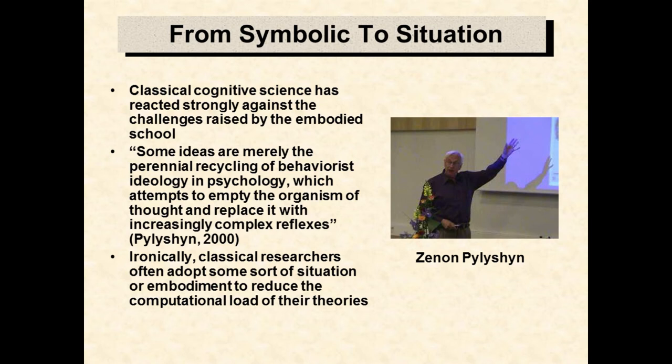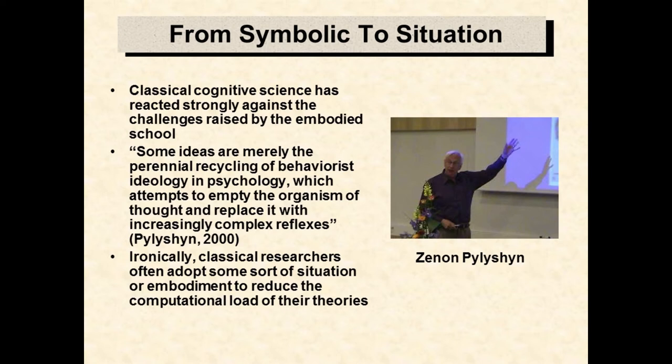Classical cognitive science has launched a counter-reaction against embodied cognitive science, claiming that embodied cognitive science is simply reintroducing behaviorism. Consider Pylyshyn's position: some ideas are merely the perennial recycling of behaviorist ideology in psychology, which attempts to empty the organism of thought and replace it with increasingly complex reflexes. Ironically, many classical scholars turn to embodied ideas in order to generate workable theories.